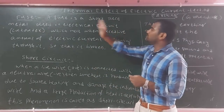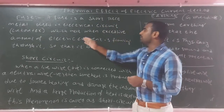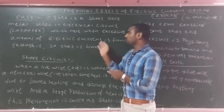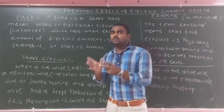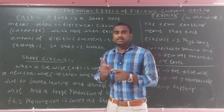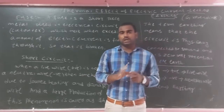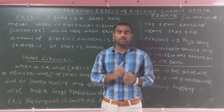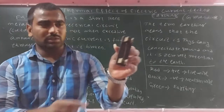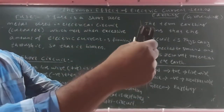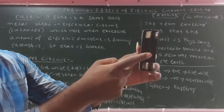The fuse is a short piece of metal used in an electrical circuit or cutout which melts when an excessive amount of electric current flows through it, breaking the circuit. When excessive current passes, the heat developed causes the fuse to melt, protecting any electrical appliance or device. Here is the cutout with terminals and the piece of metal used as a fuse.